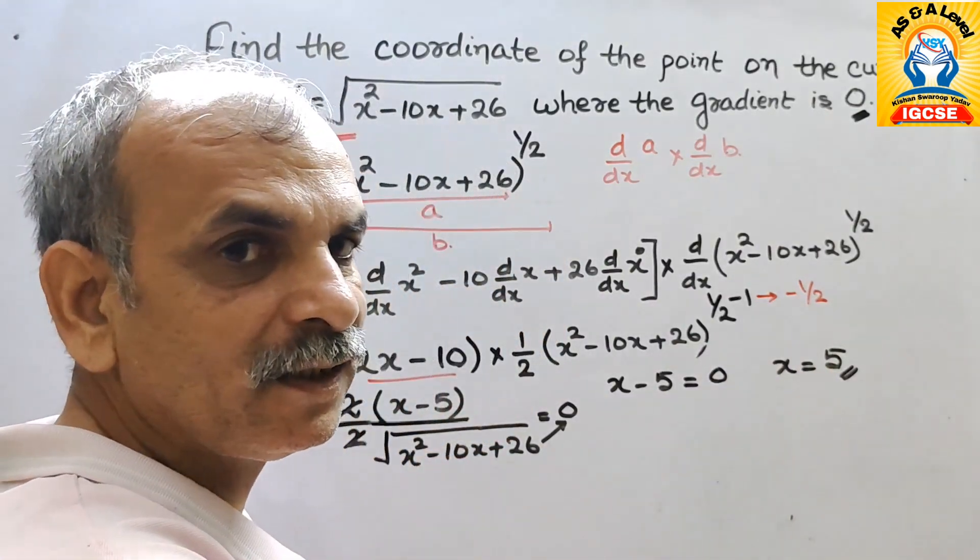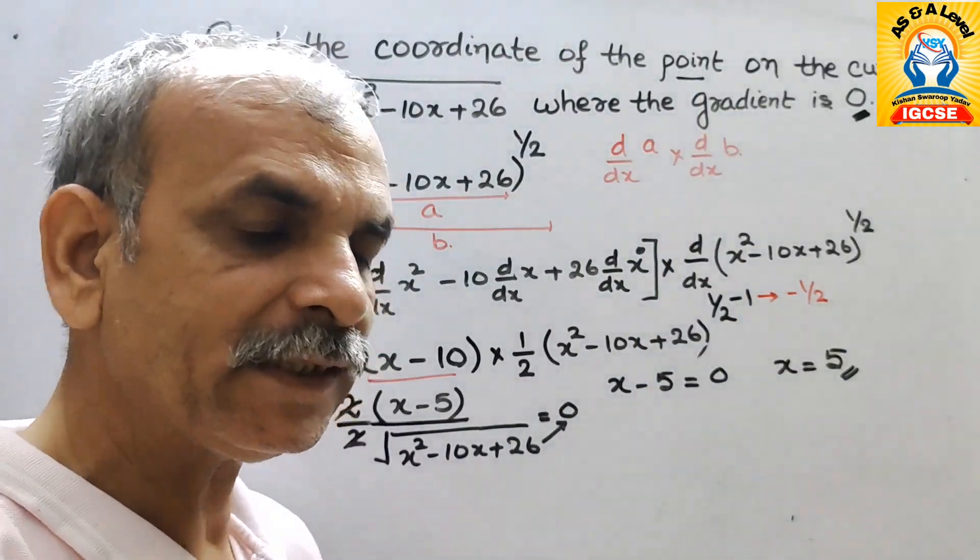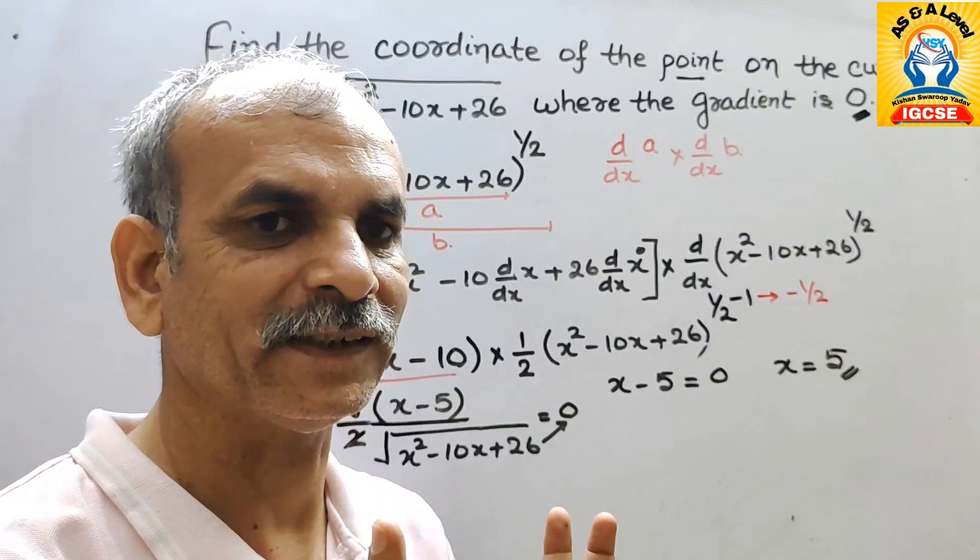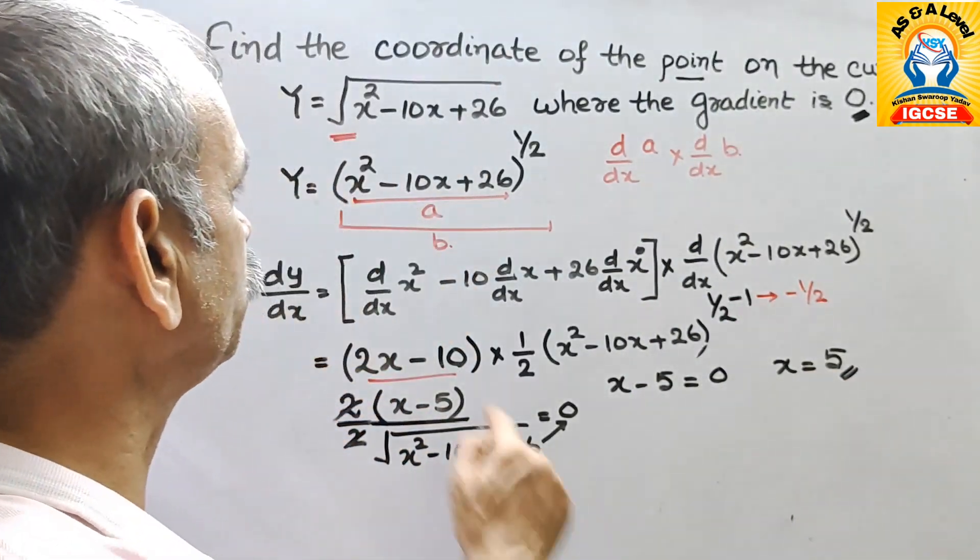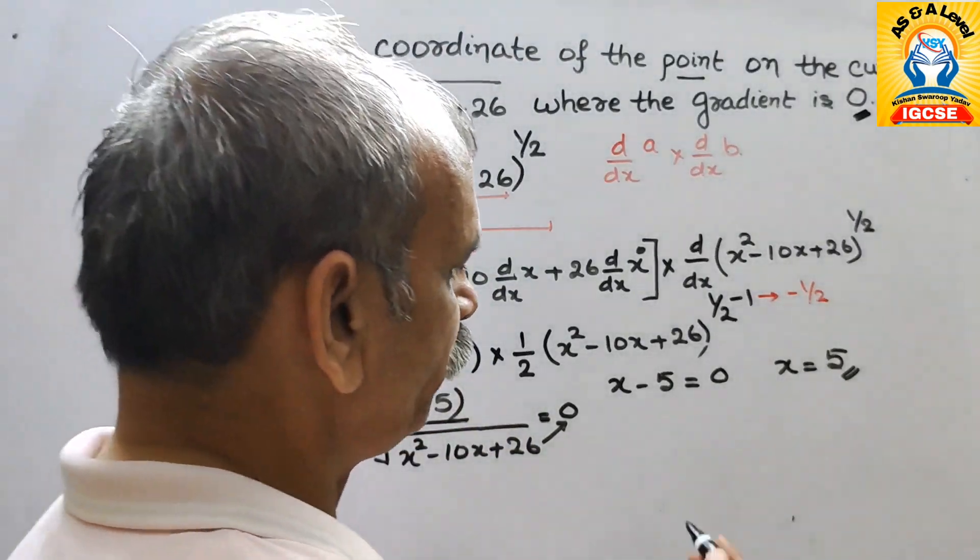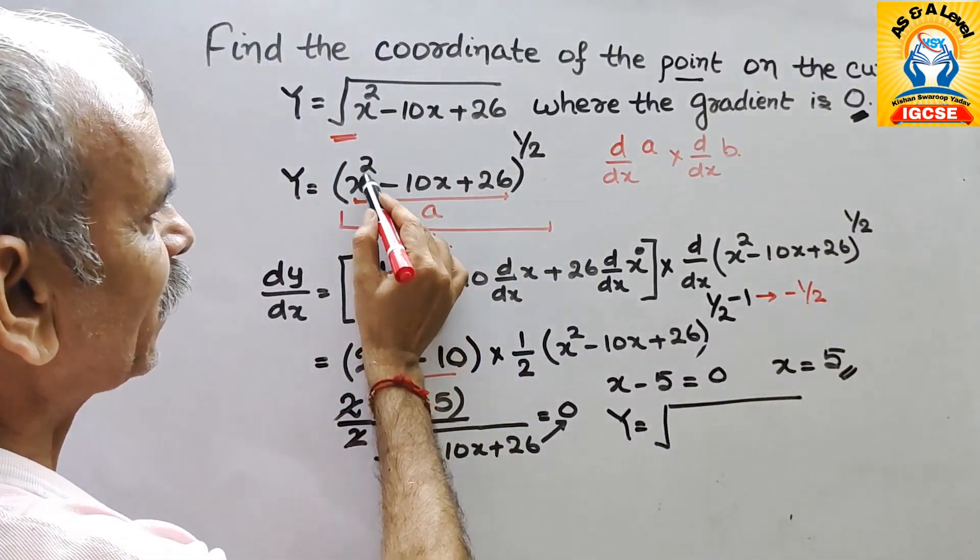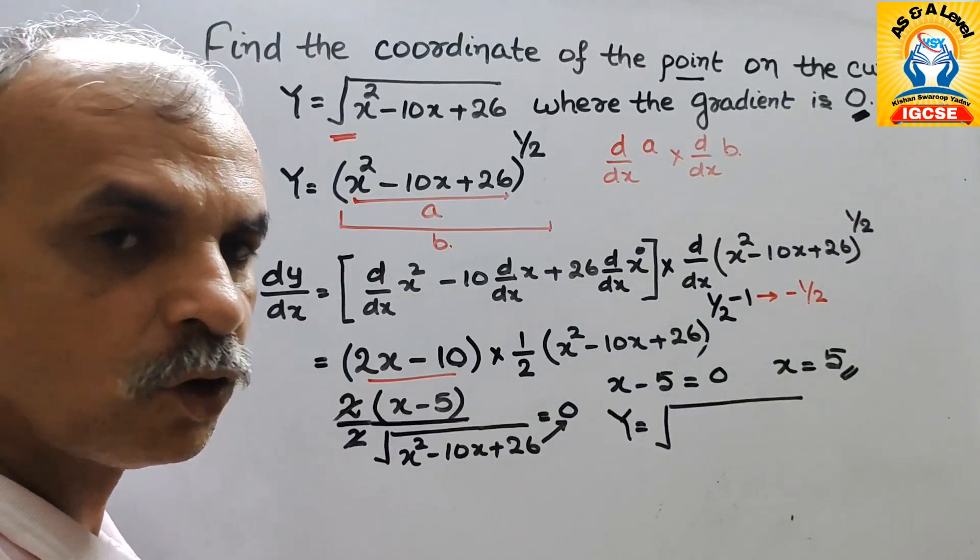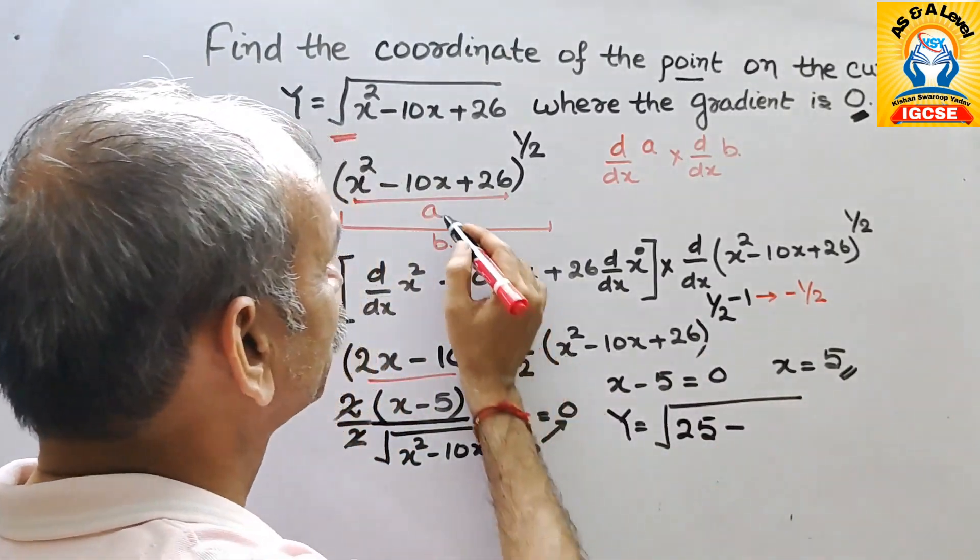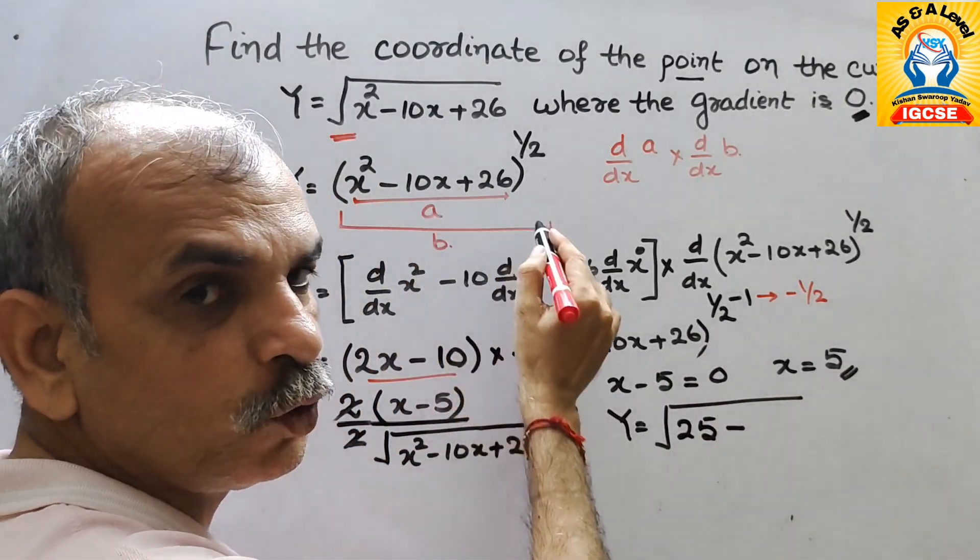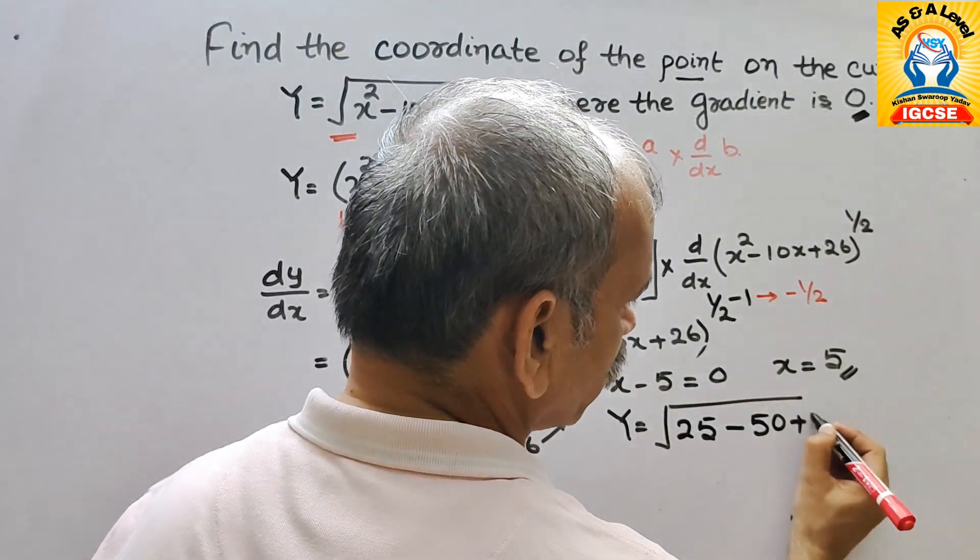They have given that, that is the point. That means it contains x and y axis coordinates. So here x is 5. What is your y? Now we will substitute this value to where? Here. So therefore we will get y is equal to root over. Now solve this. x squared, so 5 squared is 25, minus 10 into 5 is 50, plus 26.